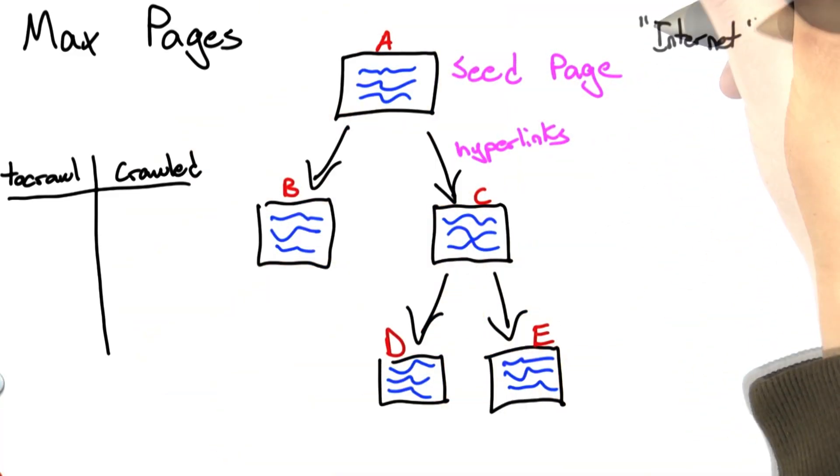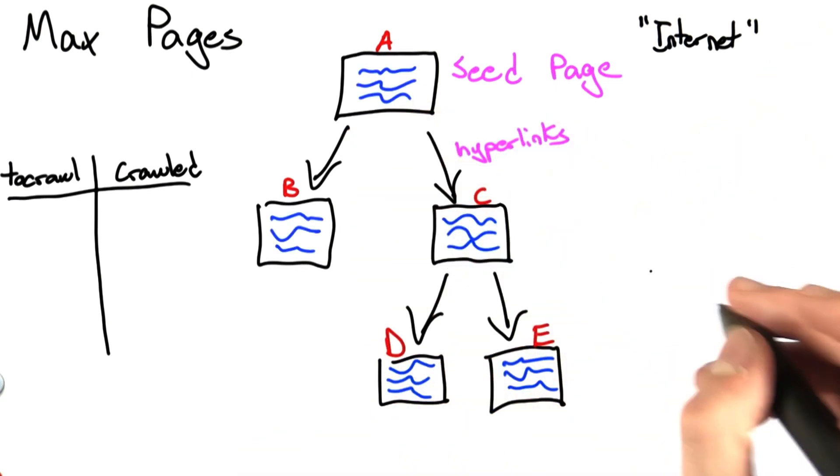So here, I've built a fake internet. It's a little smaller than the real internet, but it'll be a good example for showing how we want to modify the crawler to solve the max pages problem.